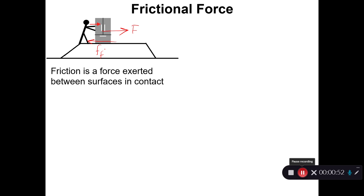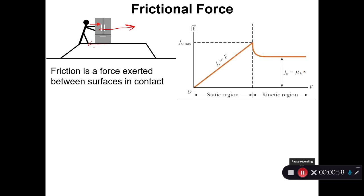Frictional force acts in the direction opposite to motion. If initially zero force is applied, there is no frictional force. As the applied force increases, the frictional force increases and continuously rises to a maximum value. At that point the box starts to move. This section is called the static region.